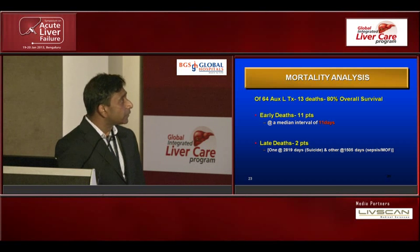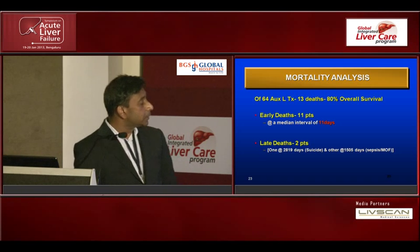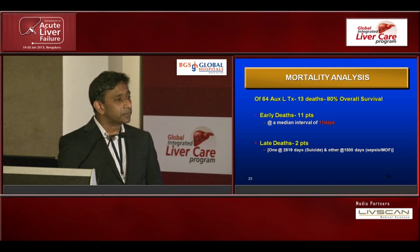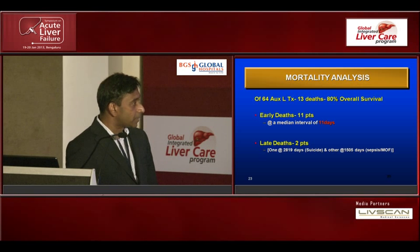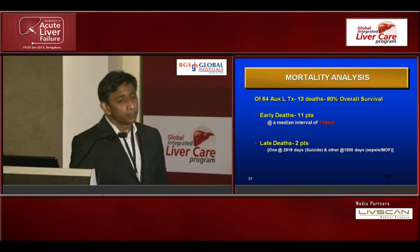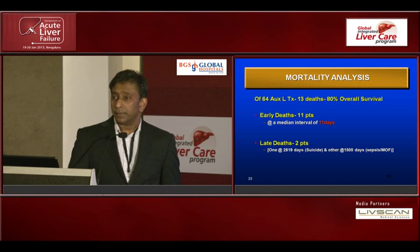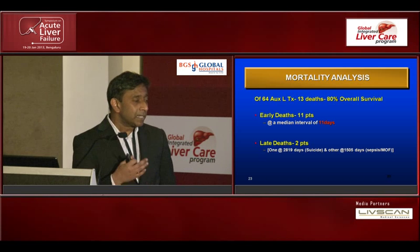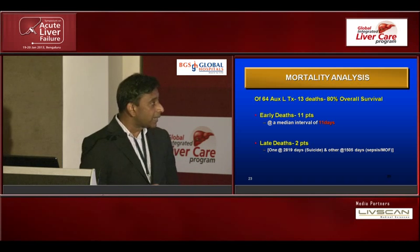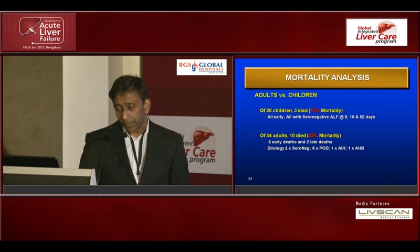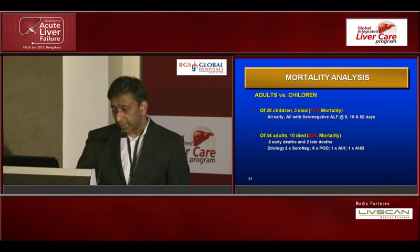The overall survival of 64 patients was 80% at more than ten-year follow-up — one-year survival would have been much higher. This includes two patients who died at 2,819 days and 1,505 days — one was a suicide and one was a hepatitis B patient with recurrence who died of sepsis five years later. The results are not bad. People say the results are not better than orthotopic liver transplant. We don't do this operation to improve results — the bonus is withdrawal of immunosuppression. There were 20 children, with three deaths — 85% survival — better than the adult results.